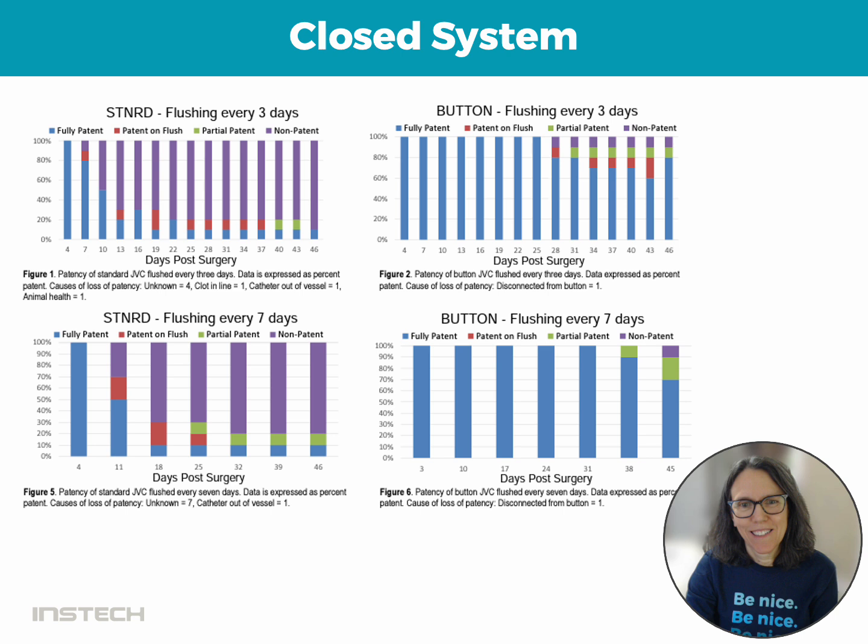The colors of the graph: blue is fully patent — infuse, withdraw, no problem. Red is patent on flush, meaning you try to withdraw and it didn't work, you infuse flush solution and try to withdraw again, then you're able to withdraw. Green is partial patent — you're able to infuse only. And purple is non-patent — catheters do not work at all.